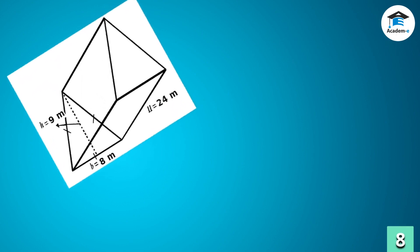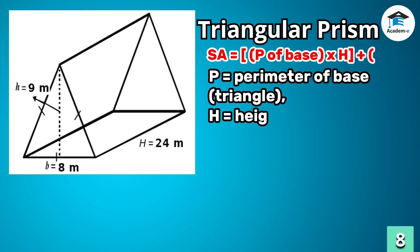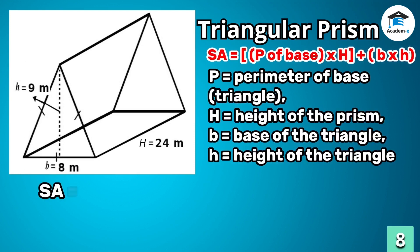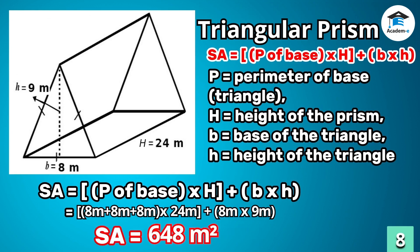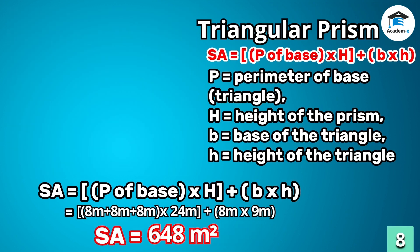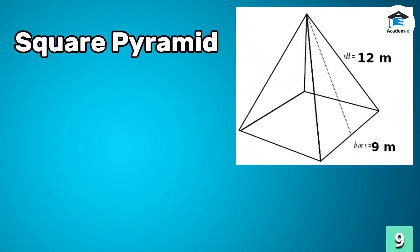Triangular prism: to get the surface area of a triangular prism, add the product of the perimeter of the base triangle and the height of the prism to the product of the base and height of the triangular base. Therefore, the surface area of the triangular prism is 648 square meters.